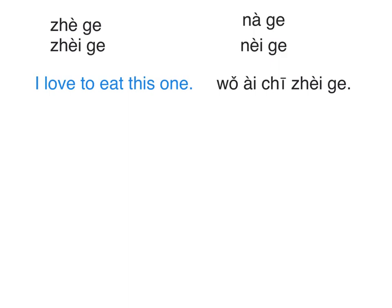Same with 那个 — on the dictionary you might see 那个, but the casual way is 那个. You just need to know both. For example: 这个pizza, 这个狗, 这个猫, 那个人, 那个pizza, 那个汉堡 — which means hamburger.